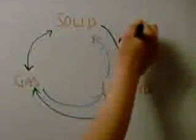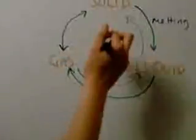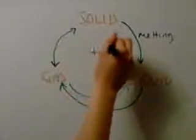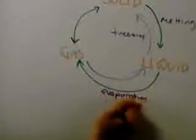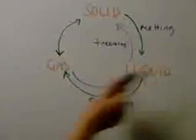When a solid becomes a liquid that's melting. When a liquid becomes a solid that's freezing. When a liquid becomes a gas that's either evaporation or boiling. When a gas becomes a liquid that is condensation. Also, a gas can turn into a solid and a solid can turn into gas, and that is sublimation.